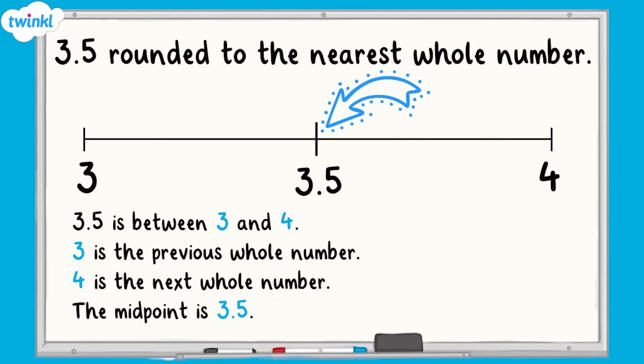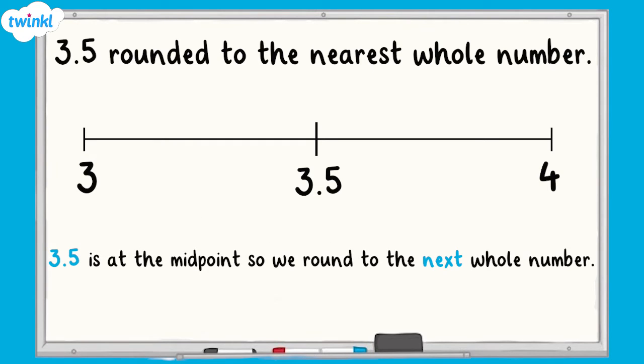We can see that our number is exactly at the midpoint between the whole numbers. It is not closer to either of them. When this is the case, we always round to the next whole number. 3.5 is 4 when rounded to the nearest whole number.